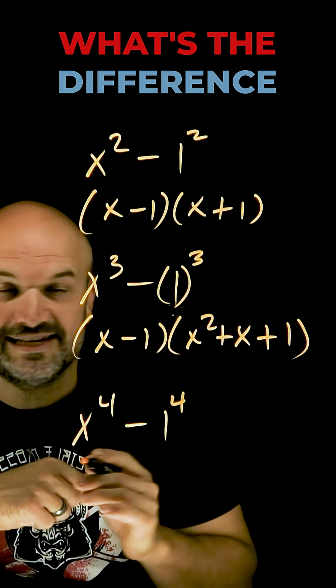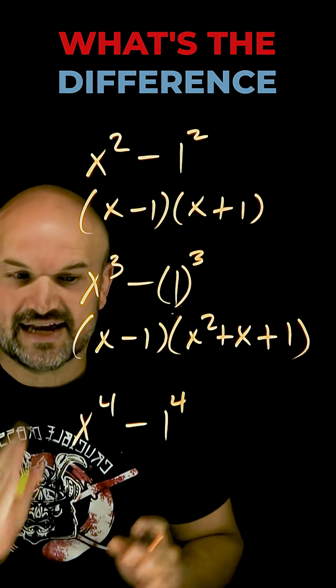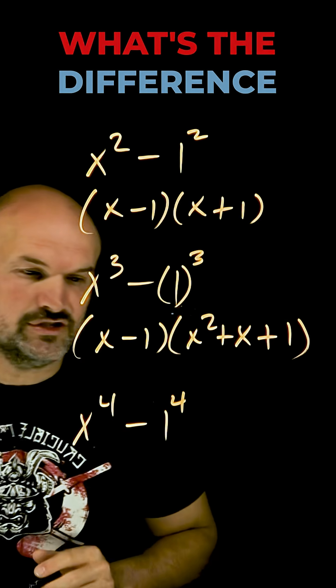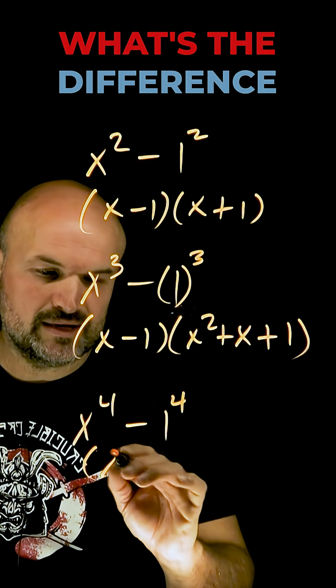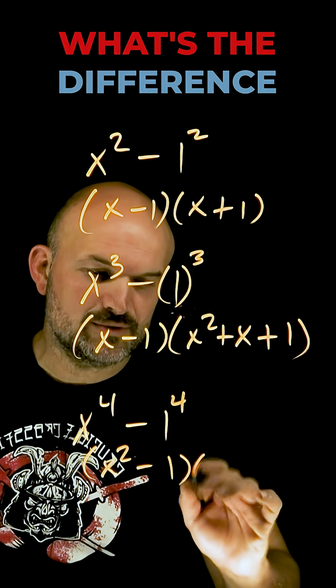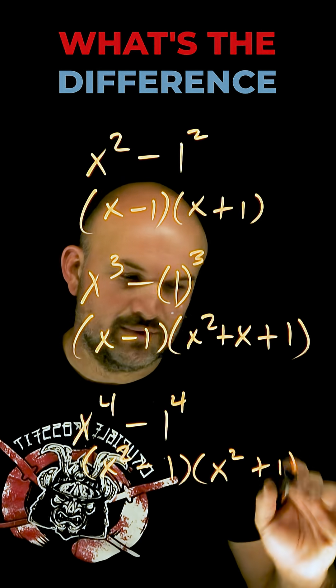The last one we can recognize as a difference of two fourths. In this case, we're simply going to use the difference of two squares. First, we can break this down into x squared minus 1 squared times x squared plus 1 squared.